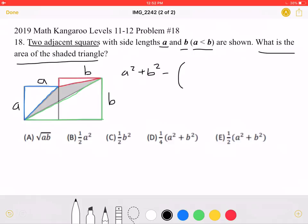The area of the triangle outlined in blue, over here, must be A squared over two, as it has side lengths of A.